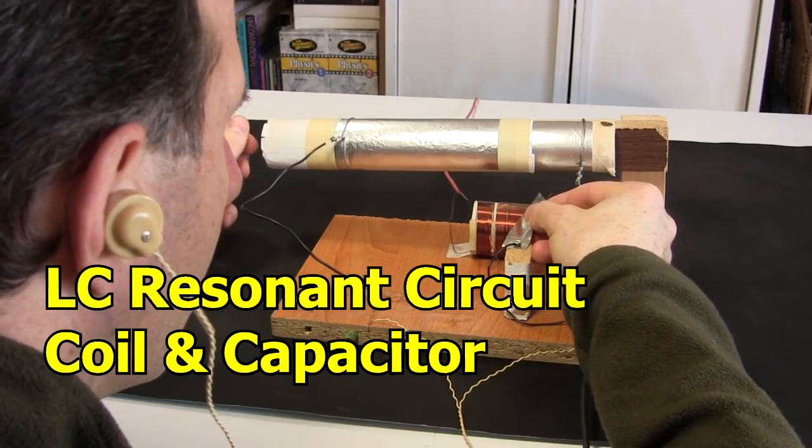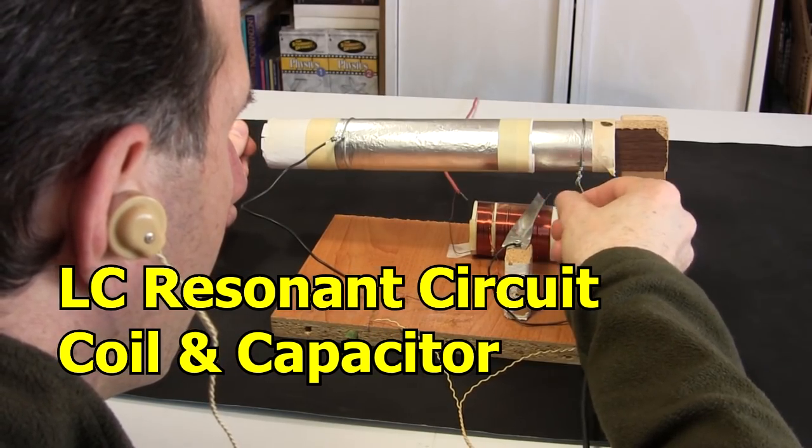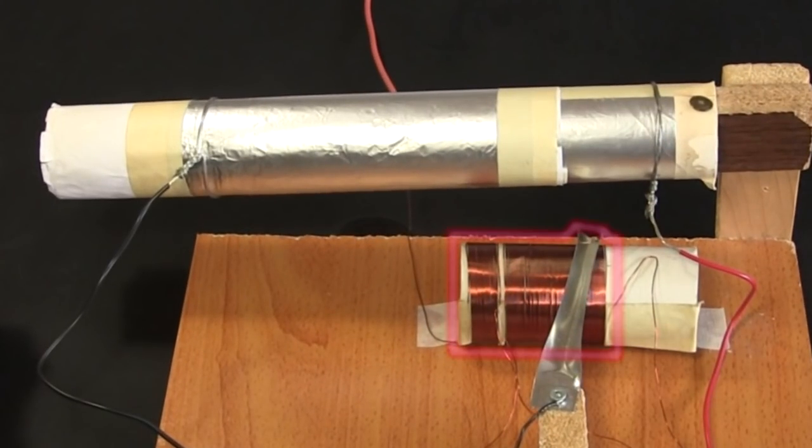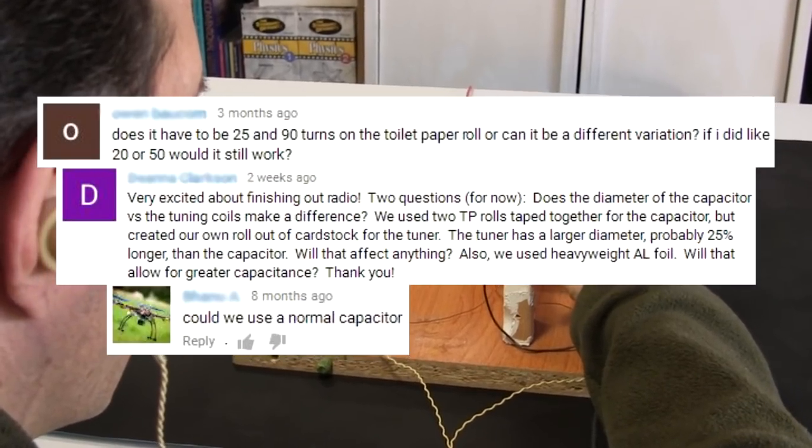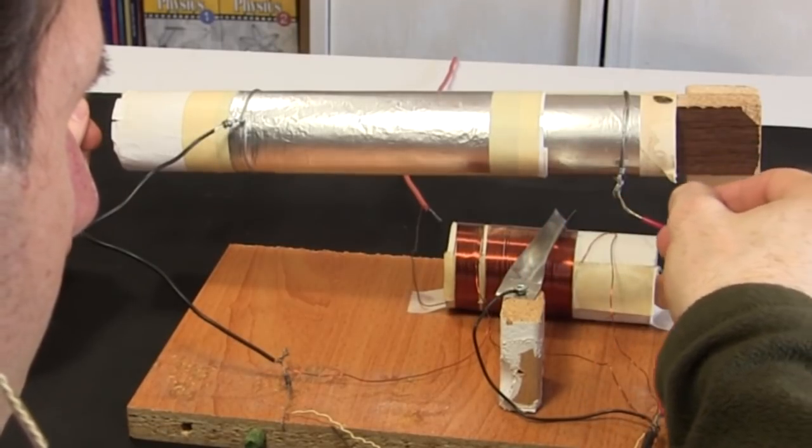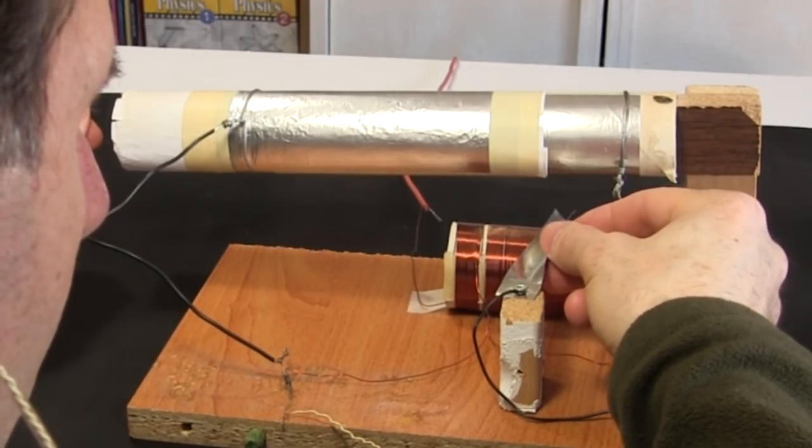Hi gang! I'm going to talk about selecting a coil and capacitor for a parallel LC resonant circuit. Basically that's this coil and this capacitor used in many crystal radios. This is something I get asked about a lot in the comments to my crystal radio videos. Hopefully this video will help with that and with other projects that have parallel coils and capacitors.